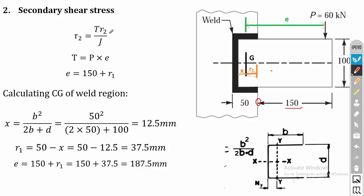The secondary stress formula is tau2 = T × R2 / J, where T = P × E (load multiplied by eccentricity). The eccentricity E equals 150 plus R1. Point G is the center of gravity, X-bar is the center of gravity of the weld region measured from the left side, and R1 is the distance from the center of gravity to the plate end.